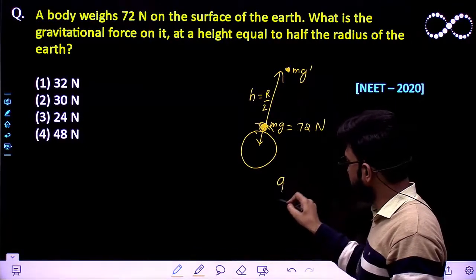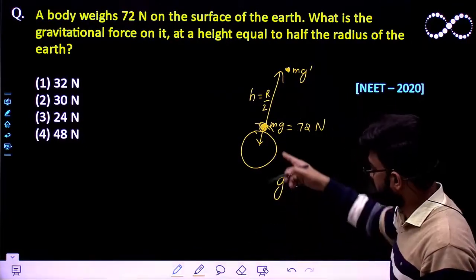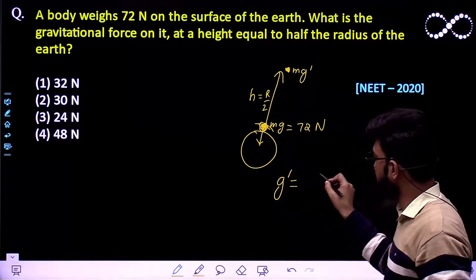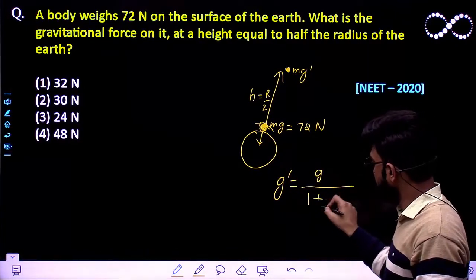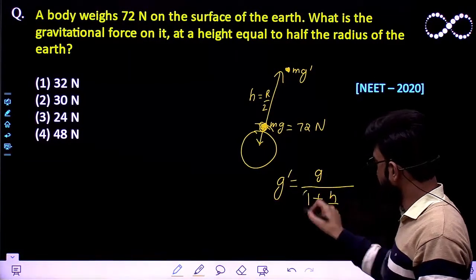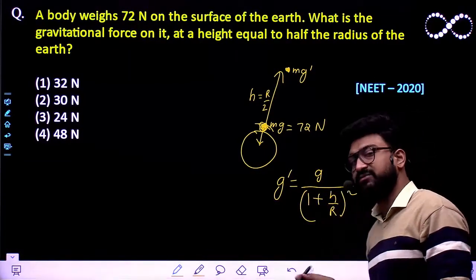This g dash is given by a relationship - if acceleration due to gravity on the surface is g, then it must be equal to g by 1 plus h by r whole square. So this is the expression that we already know.